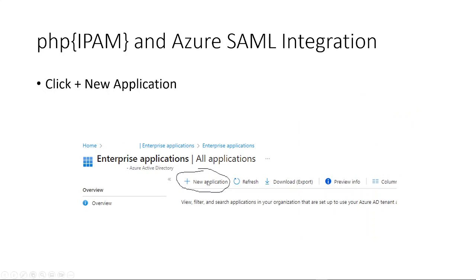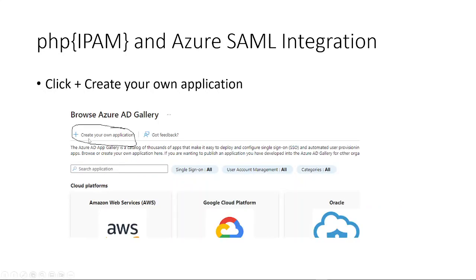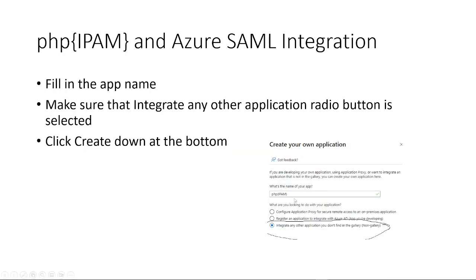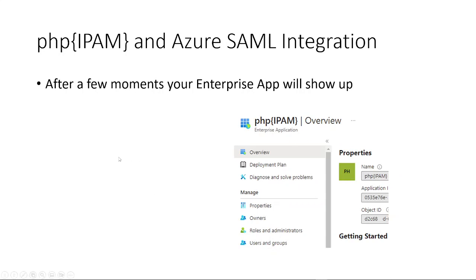Next, we'll click Create New Application up towards the top. After that, we'll select Create Your Own Application. You'll put in the app name and make sure that this radio button down here is selected. Then hit the Create button at the bottom. After a few moments, you'll be dropped into your new enterprise application — called PHP IPAM, or whatever you chose to call it.